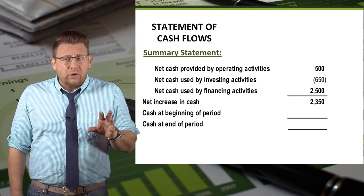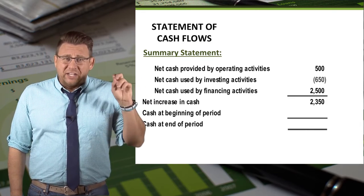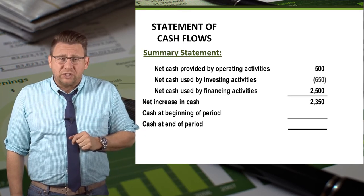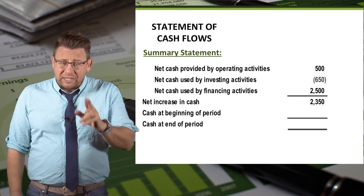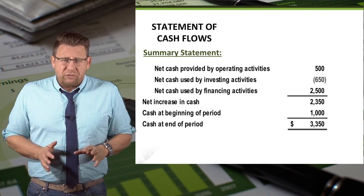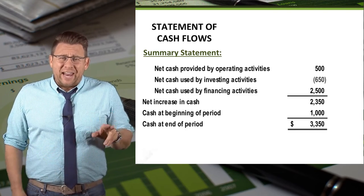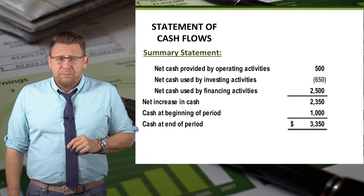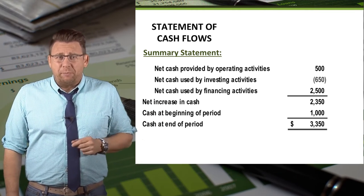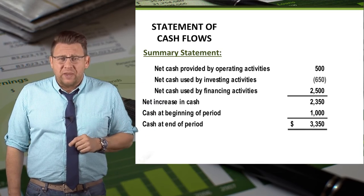It is very important that the net change in cash tie to the change in cash reported on a comparative balance sheet — they must match. When completing the statement of cash flows, the net change in cash is added to the beginning cash balance, and the result is the ending cash account balance. This must match what is reported on the balance sheet.